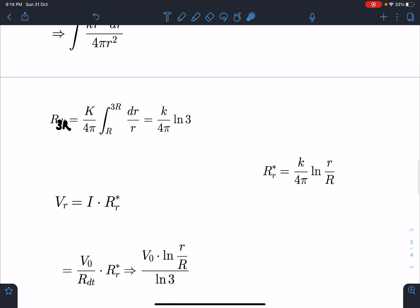If I take this limit from R to general r, I'll be getting resistance up to radius of r. So resistance up to radius of r I can write as K/(4π) ln(r/R). This is known to us.